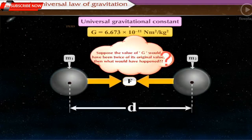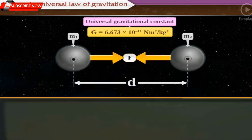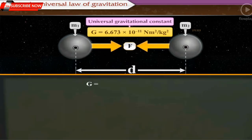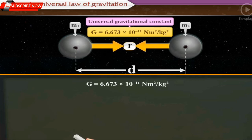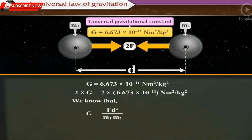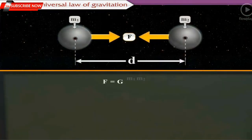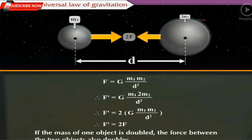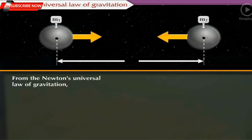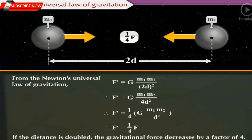Suppose the value of G would have been twice its original value — what would have happened? If the value of G would have been twice of 6.673 into 10 raised to minus 11 Newton meter square per kilogram square, then the gravitational force would have been doubled, provided the masses of two objects and the distance between them remain constant. From the equation F = G into M1 into M2 upon D-square, it is clear that if the mass of one object is doubled, the force also doubles. Also, if the distance is doubled, the force decreases by a factor of 4.